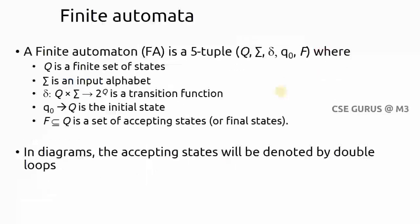We will see the formal definition and tuple notation. A finite automata is a five-tuple notation consisting of Q, Sigma, delta, q-naught, and F. Q is a finite set of states, Sigma is the input alphabet, delta is a mapping (transition) function, q-naught is the initial state, and F is one final state or a set of final states.